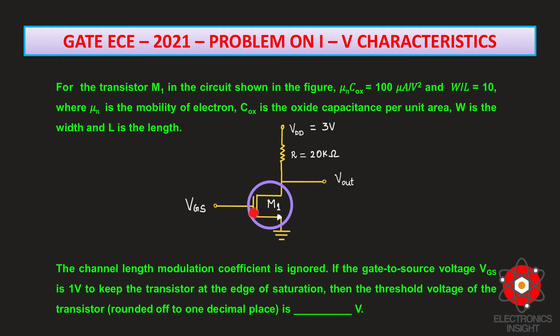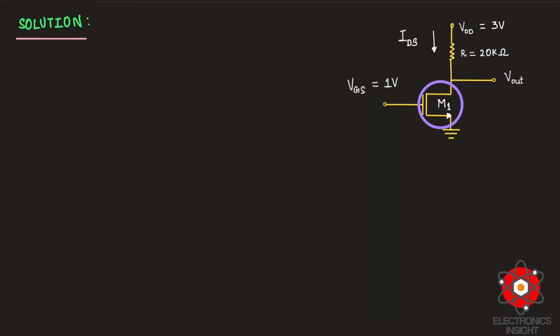We need to estimate the threshold voltage of transistor M1. From the given circuit — an NMOS with a resistive load — we can write the drain-to-source current equation as IDS = (VDD − Vout) / R, because there is a potential drop across the resistor and the drain-to-source current passes through M1.